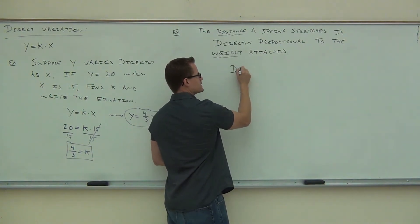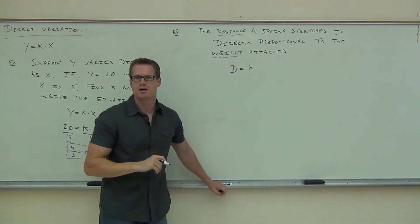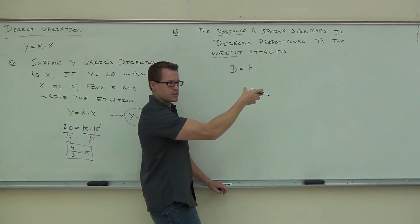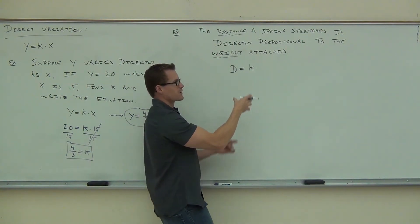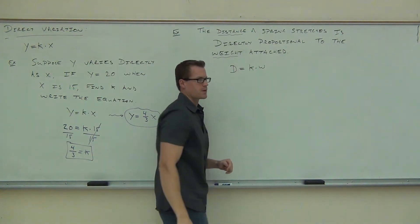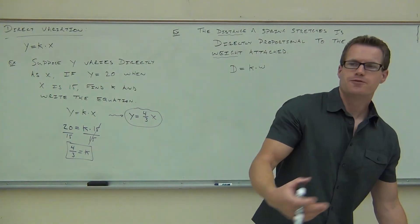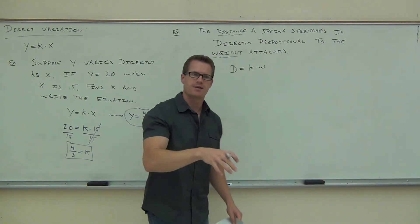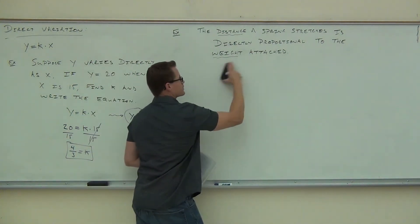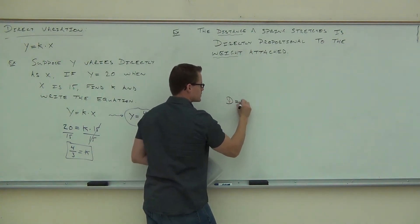Why is it d equals k times w? What word clues you in? 'Directly' — good. d for distance is the first thing we saw in our sentence, so distance varies directly, meaning distance equals k times whatever weight we put on. That's our first part: identify the equation we're working with. So, d equals k times w — we got that from our very first sentence.